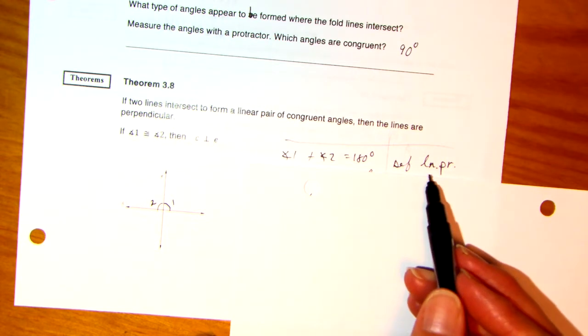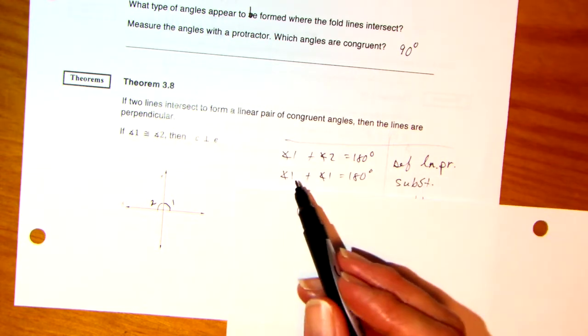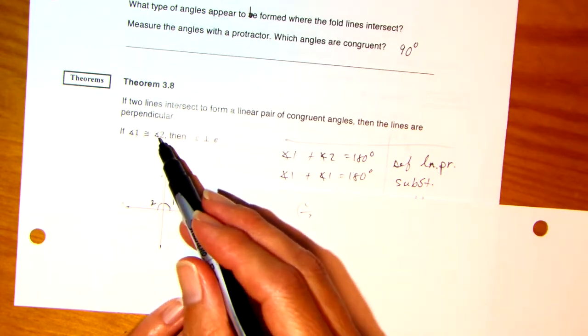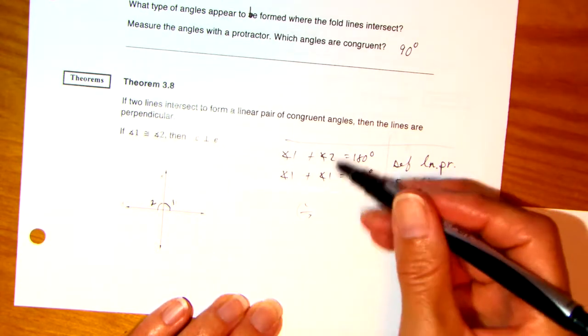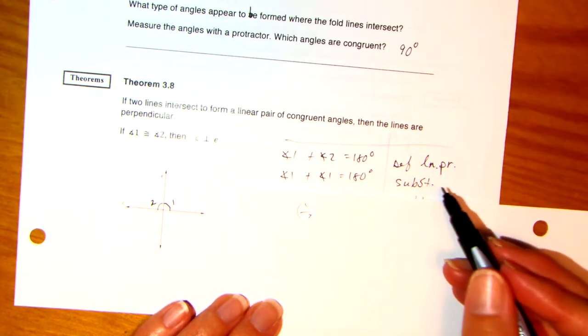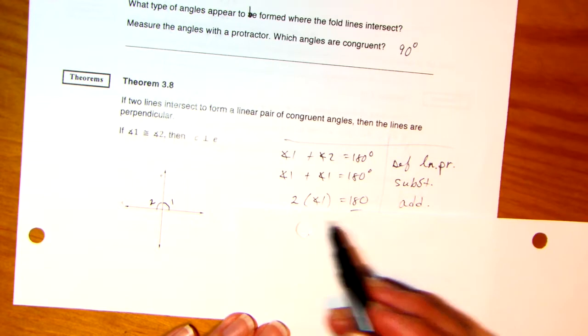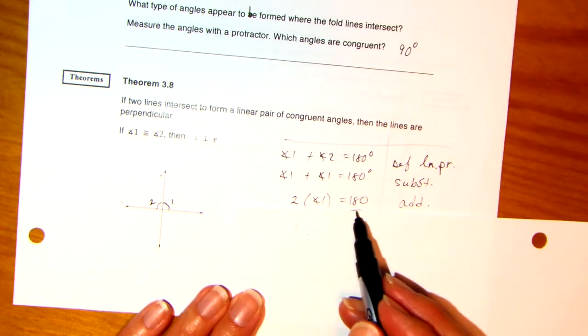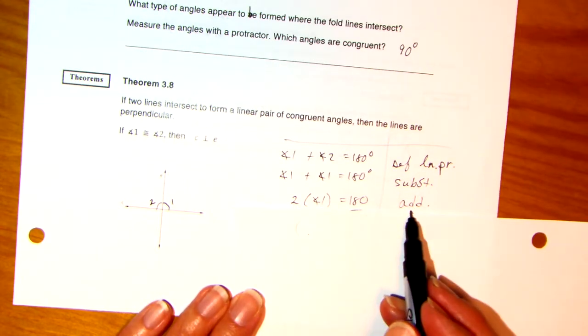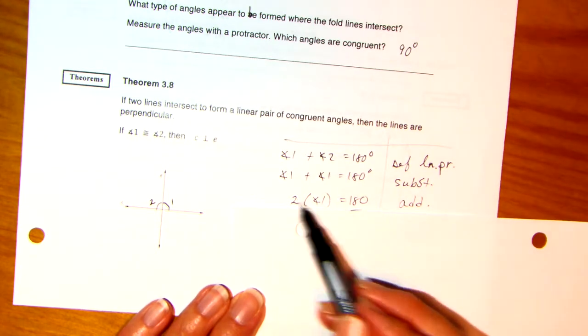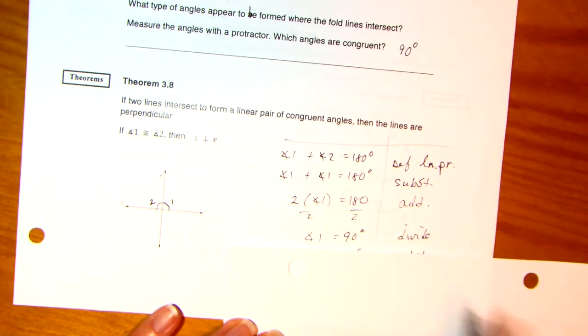So angle 1 plus angle 2, they make a straight line, equal 180. It's the definition of a linear pair. Look at this. Angle 1 plus angle 1 equals 180. How did I go from here to here? Well, angle 1 is congruent to angle 2. So I substituted that in. Aha! Okay, so angle 1 plus angle 1, I have two of those. So two angle 1s is equal to 180. I just basically addition property of equality. Divide both sides by 2.